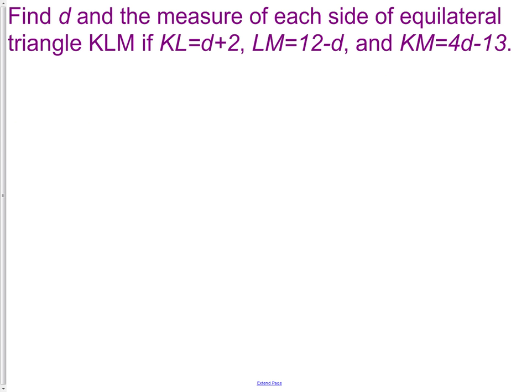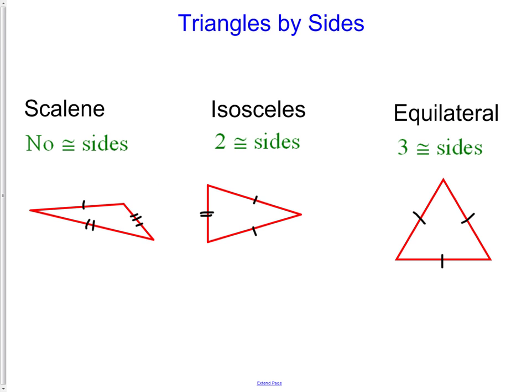Let's try and use some of the properties that we just learned about triangles to solve a question. The question is, find d and the measure of each side of an equilateral triangle. Okay, first off, we need to remember, what is an equilateral triangle? These properties are going to help us solve these types of problems. An equilateral triangle is a triangle in which all three sides are equal.